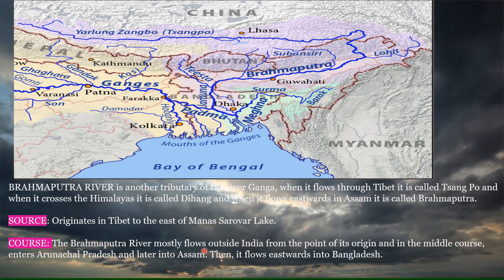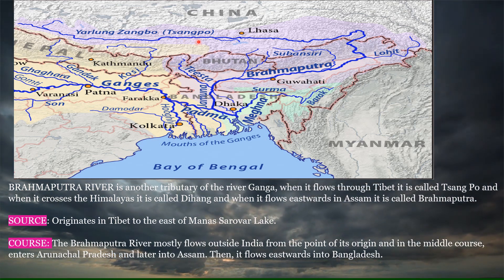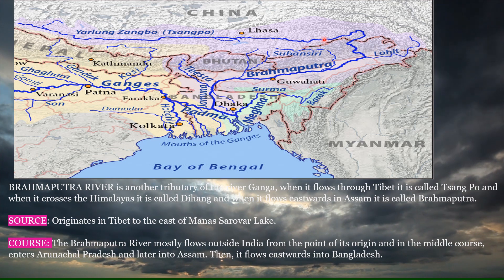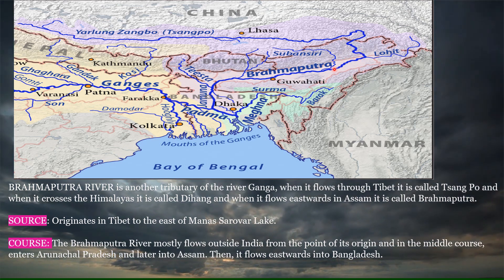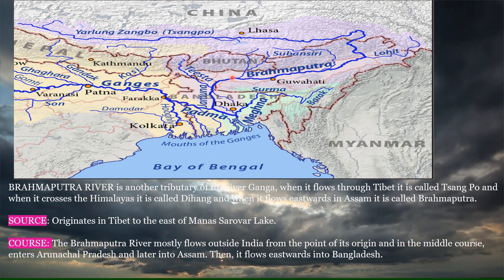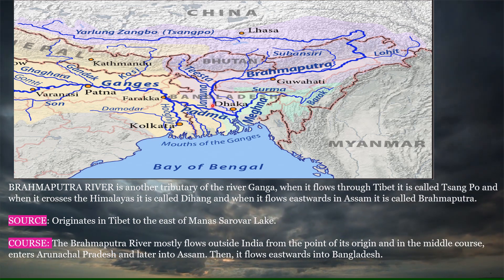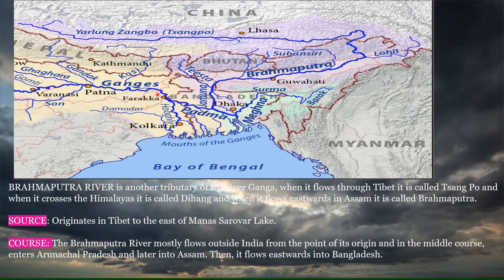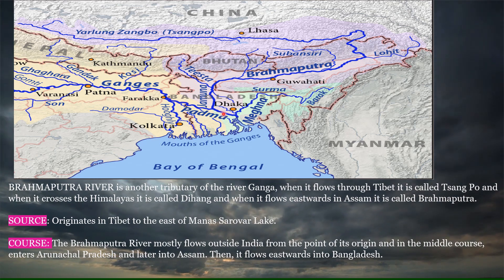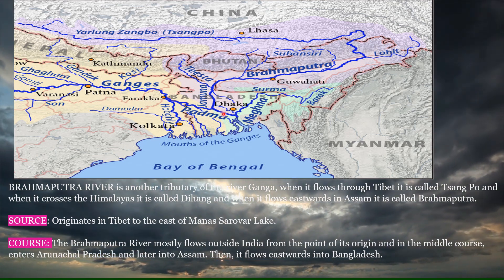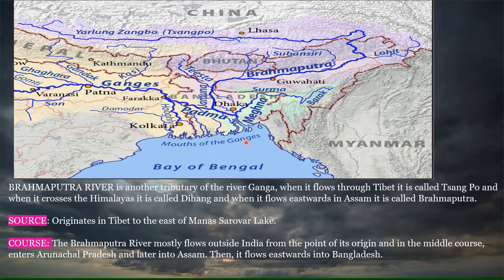The Brahmaputra River mostly flows outside India. It enters Arunachal Pradesh as Dihang and later into Assam as Brahmaputra, then flows eastwards before taking a sharp turn southwards. It flows into Bangladesh as the Jamuna River, joins the Ganga — called Padma in Bangladesh — and then flows as the Meghna River before emptying into the Bay of Bengal.